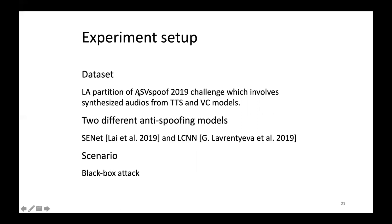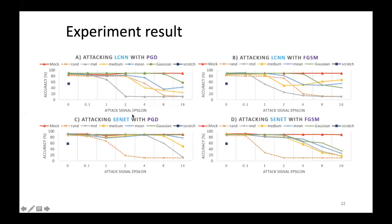Let's get into the experiments. For the datasets, we used the LA partition of the ASVspoof 2019 Challenge. The dataset contains audios generated by text-to-speech or voice conversion models. Two different anti-spoofing models are adopted: SE-Net and LCN. We simply borrowed their model structures, so if you are interested in more details, you can refer to their papers. The attack scenario in this paper is black-box attack, where the attackers don't know the internals of the target model.